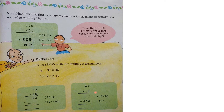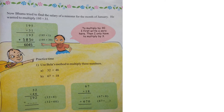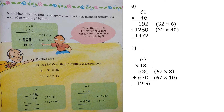For 67 × 18, split 18 into 10 + 8. Multiply 67 × 8 and write the answer. For 67 × 10, you simply add a zero to 67, giving 670. Add the two results. As shown here, 32 × 46 gives the answer 1472, and 67 × 18 gives the answer 1206. I hope you understand this technique — it should be easy for you.